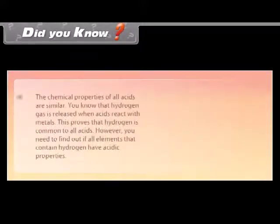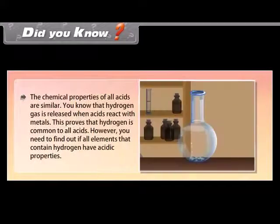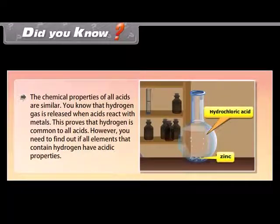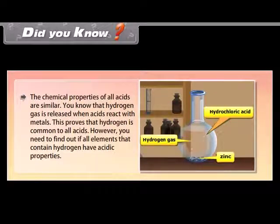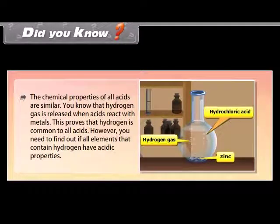The chemical properties of all acids are similar. Hydrogen gas is released when acids react with metals, which proves that hydrogen is common to all acids. However, you need to find out if all elements that contain hydrogen have acidic properties.